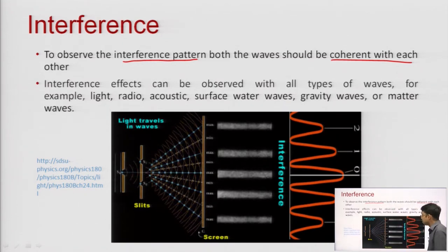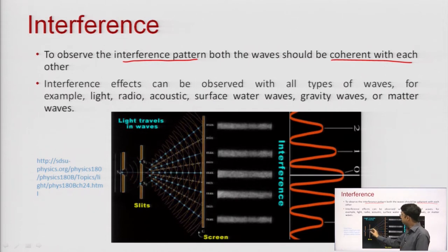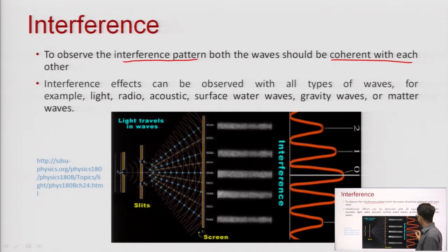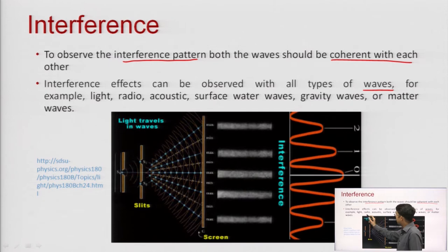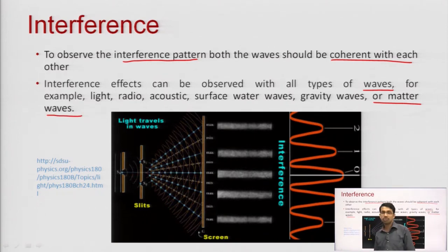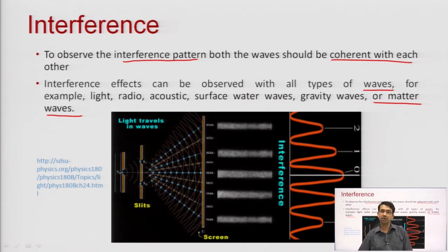In Young's double slit experiment, there is a single slit followed by slit 1 and slit 2 — two coherent sources equidistant from slit 1. Constructive interference gives maximum brightness and destructive interference gives no brightness, producing a bright-dark interference pattern: 0th maxima, first and second principle maxima, and so on. Interference effect can be observed with all types of waves — light waves, radio waves, acoustic waves, surface water waves, gravity waves, and matter waves.